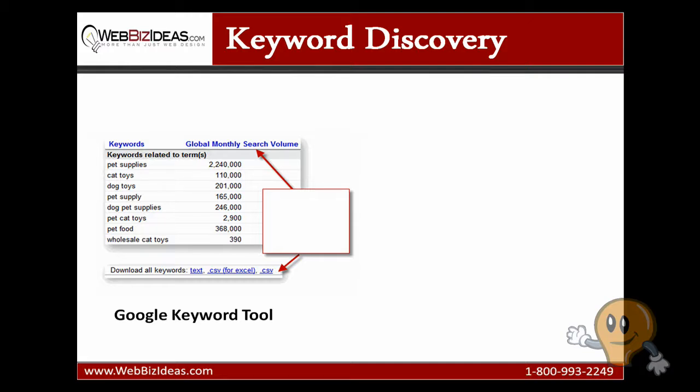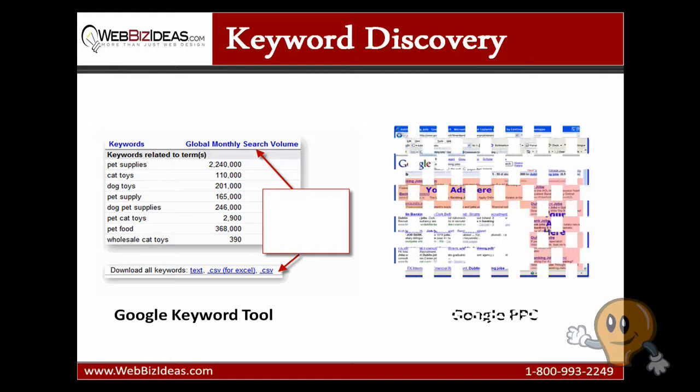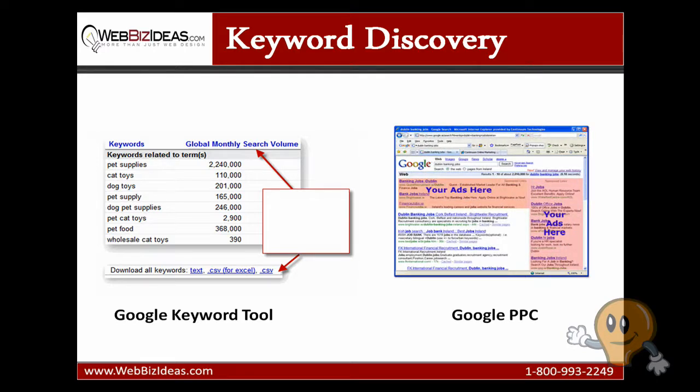The best tool to estimate traffic accurately is Google Pay-Per-Click. It will take some money to do correctly, but it will provide real results. What you do is start a pay-per-click account using all the keywords you want to target organically. The key is to make sure your ad appears every time on the first page of the results. Google has excellent tracking software and will report to you on how many impressions your ad receives, so your ad will always appear on the first page and you'll get an accurate result on how many people are searching for those keywords.